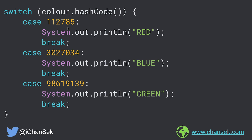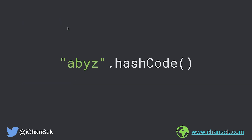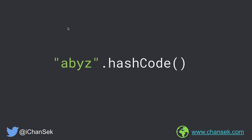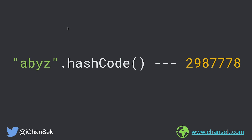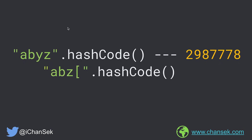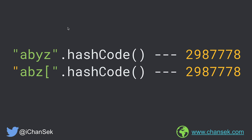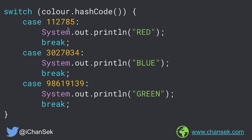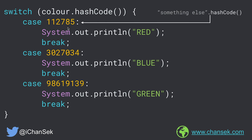But still it is not a foolproof solution, and the reason behind that is hash collision. For example, let's say we have a string called abyz — its hash code is equal to 2987778. There might be some other strings whose hash code is the same as abyz. If some other string also has a hash code equal to one of these integers, our code might break.